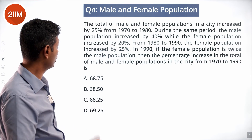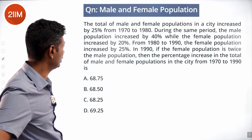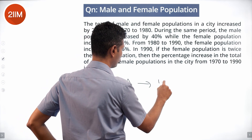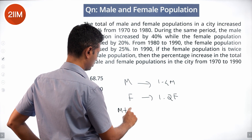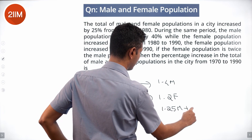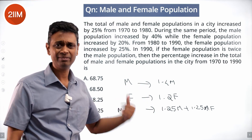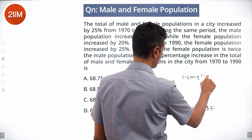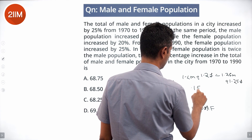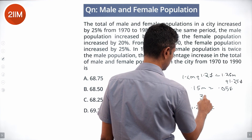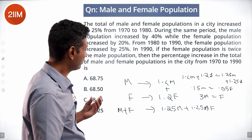The total male and female population increased by 25% from 1970 to 1980. Male increased 40%, female increased 20%. So: 1.4M + 1.2F = 1.25(M + F), giving 0.15M = 0.05F, or F = 3M. The number of females is three times the number of males.